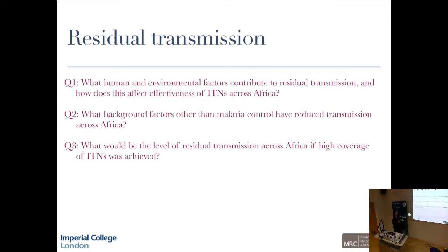The first one is, what are the human and environmental factors that are contributing towards residual transmission? By this I mean, interventions might drive down malaria a huge amount or they should drive down prevalence and transmission intensity a huge amount in some places. In some places they're still being kept high, and we don't know why. This heterogeneous pattern across Africa is very important for us to understand how this interacts with the effectiveness of the most widely used intervention, which is insecticide-treated bed nets. We're trying to also look at what are the background factors other than malaria control that have reduced transmission across Africa.